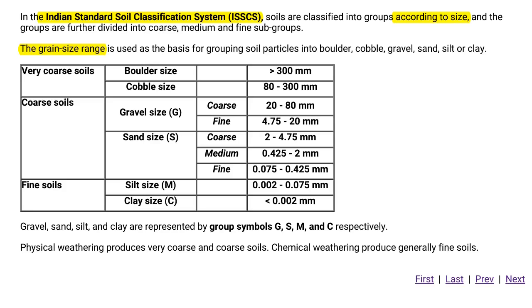Gravel, sand, silt, and clay are represented by the group symbols G, S, M, and C respectively. Thank you for watching this video.